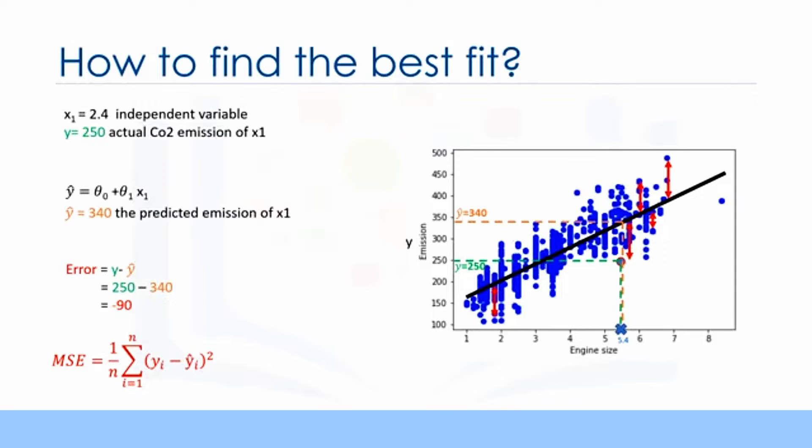Mathematically, it can be shown by the equation mean squared error, shown as MSE. Our objective is to find a line where the mean of all these errors is minimized. In other words, the mean error of the prediction using the fit line should be minimized. Let's reword it more technically. The objective of linear regression is to minimize this MSE equation, and to minimize it, we should find the best parameters theta 0 and theta 1. Now, the question is how to find theta 0 and theta 1 in such a way that it minimizes this error. How can we find such a perfect line? Or, said another way, how should we find the best parameters for our line? Should we move the line a lot randomly and calculate the MSE value every time and choose the minimum one? Not really.